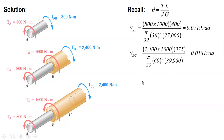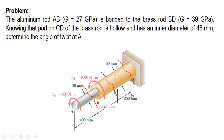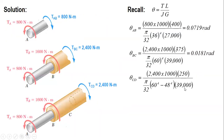Lastly, for segment CD. Since it is a hollow shaft, the polar moment of inertia is π/32 times (outer diameter⁴ minus inner diameter⁴). The length is 250 mm. The angle of twist for segment CD is 0.0205 radians.